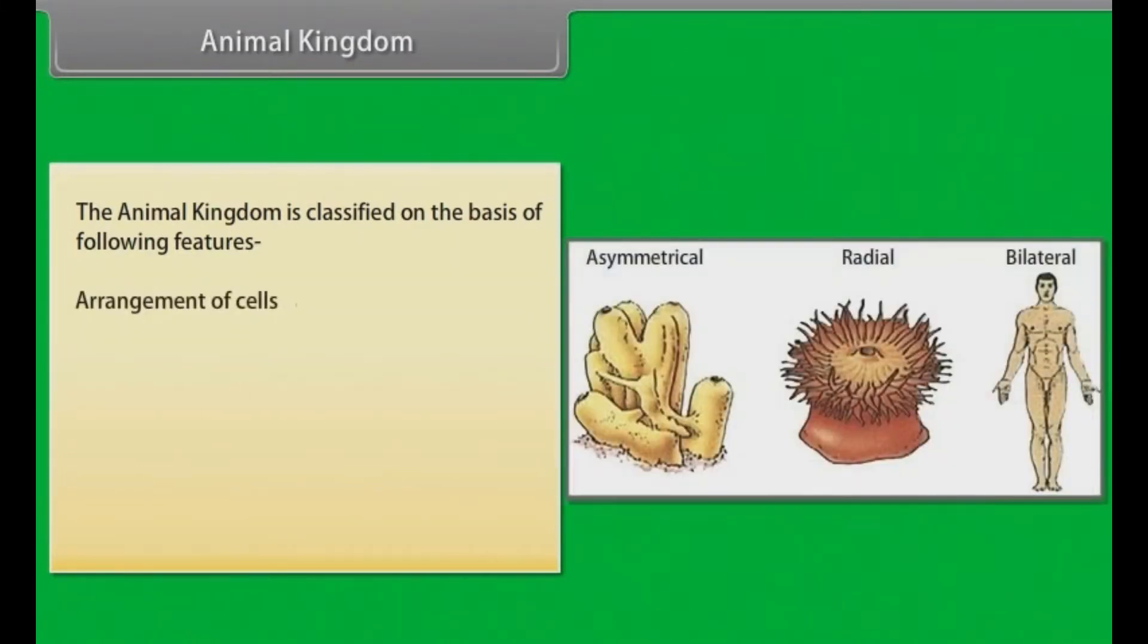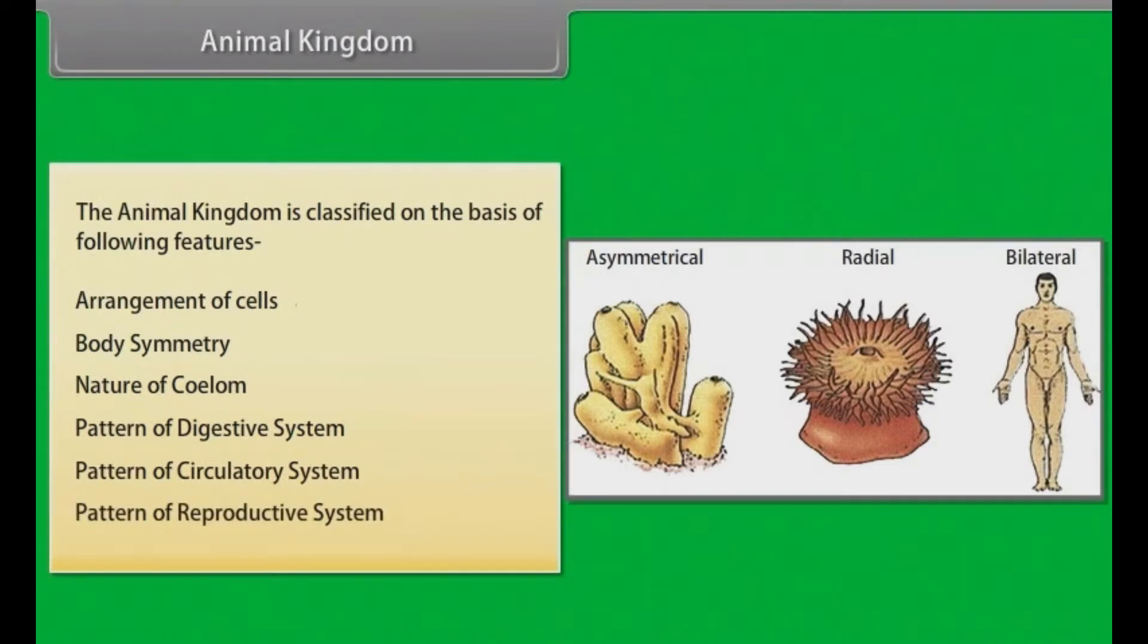Most animals are motile meaning they can move spontaneously and independently. All animals are also heterotrophs meaning they must ingest other organisms for sustenance. The animal kingdom is classified on the basis of following features: arrangement of cells, body symmetry, nature of coelom, pattern of digestive system, pattern of circulatory system, pattern of reproductive system.